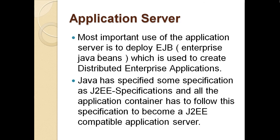The most important use of an application server is to deploy EJBs — Enterprise Java Beans — which are used to create distributed enterprise applications. Java has specified the J2EE specification, and all application containers must follow this specification to become J2EE compatible.